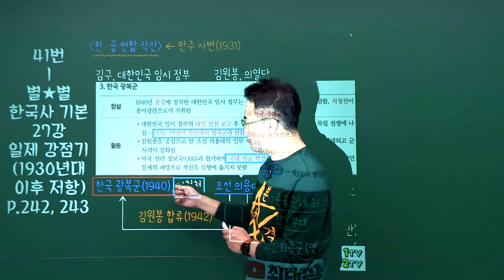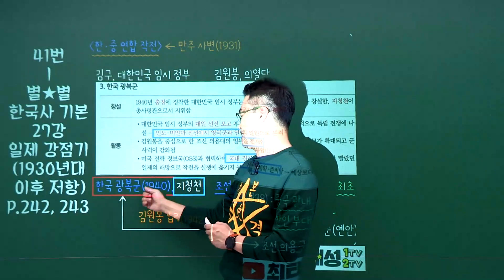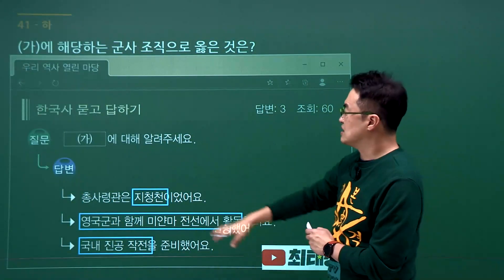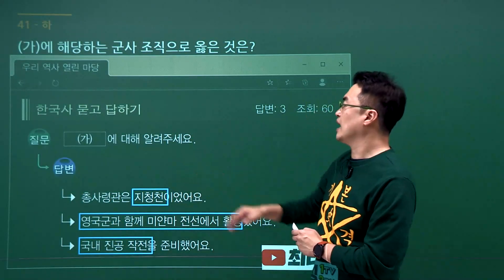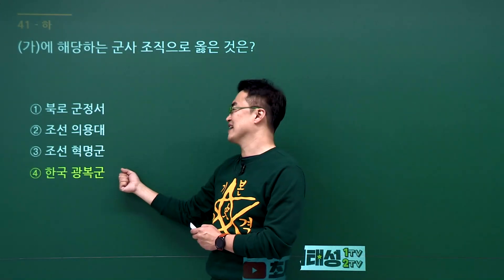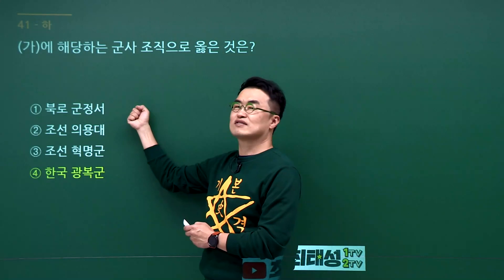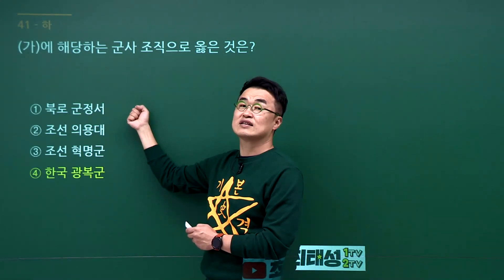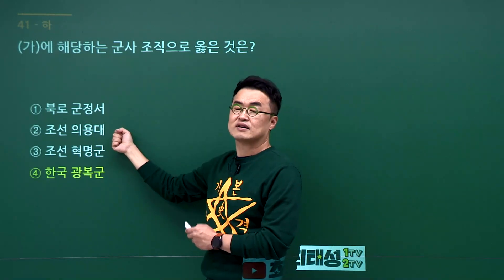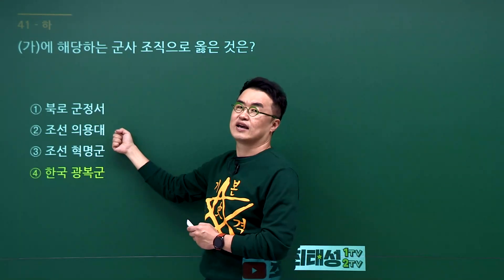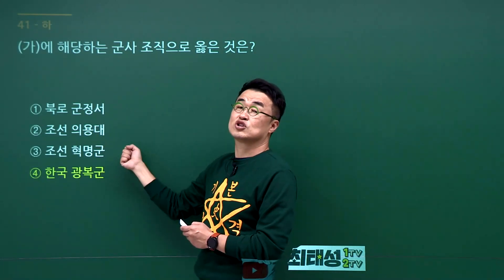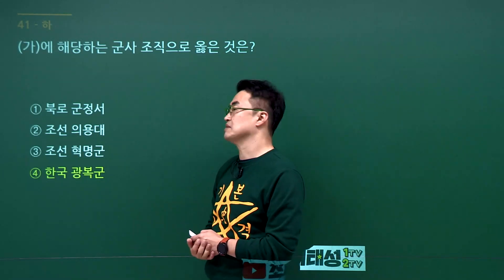한국광복군 문제입니다. 지청천이라면 한국광복군을 이끌었다는 것을 알아야 합니다. 문제에서 총사령관 지청천이 나왔으니 한국광복군이 정답입니다. 4번 답지입니다. 북로군정서는 1920년대 김좌진의 청산리 전투와 연결됩니다. 조선의용대는 김원봉이 만든 중국 관내 최초 군사조직이고, 조선혁명군은 만주에서 양세봉이 1930년대 초반 이끈 조직입니다. 정답은 4번입니다.